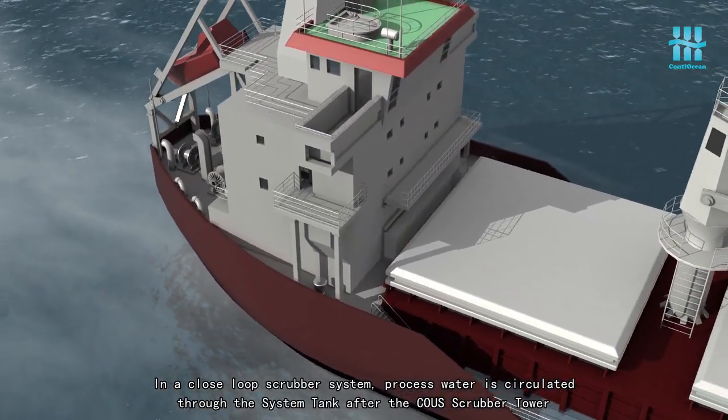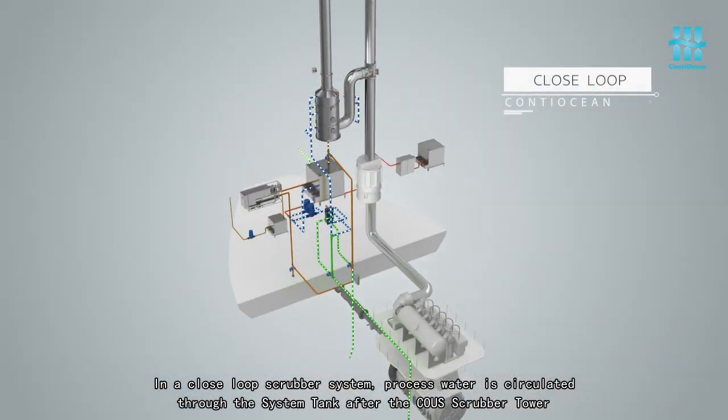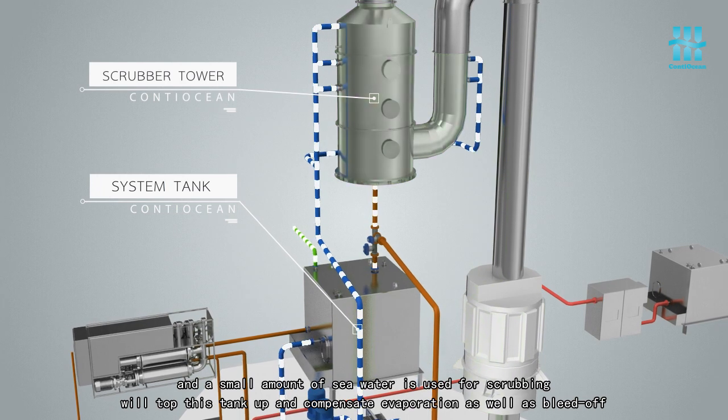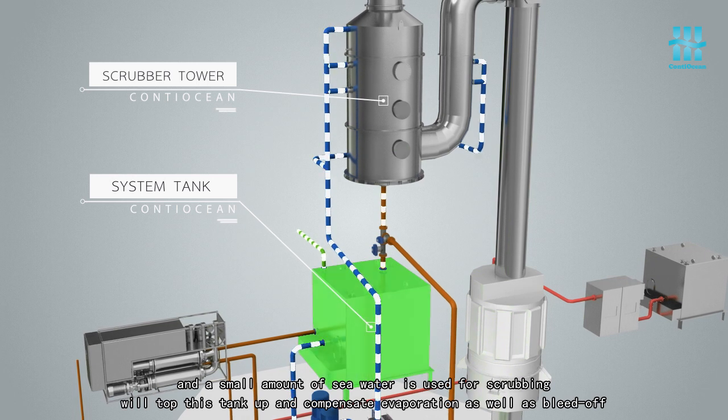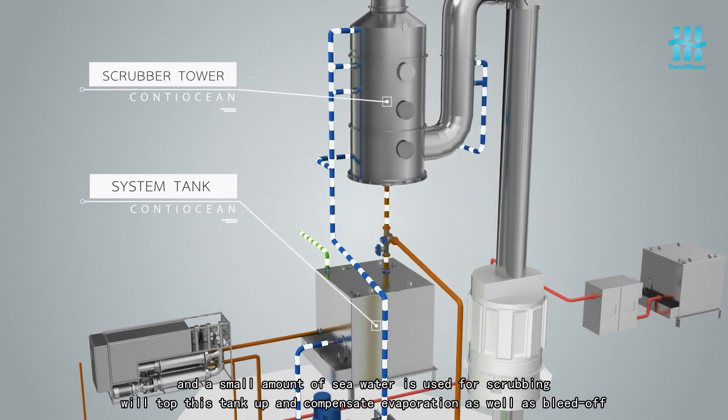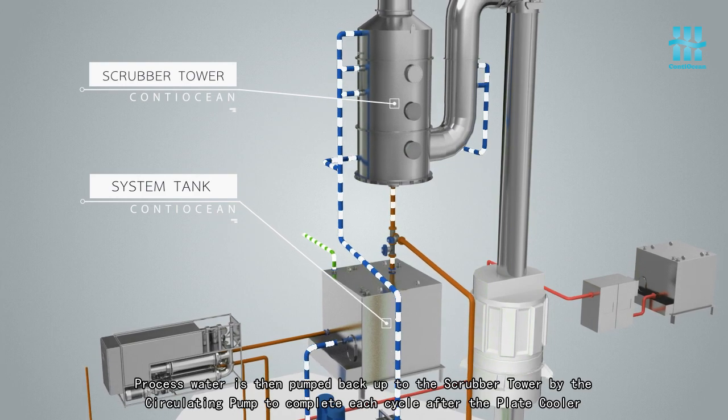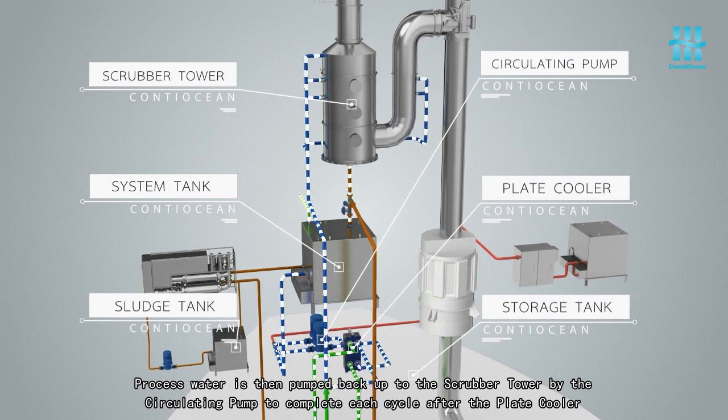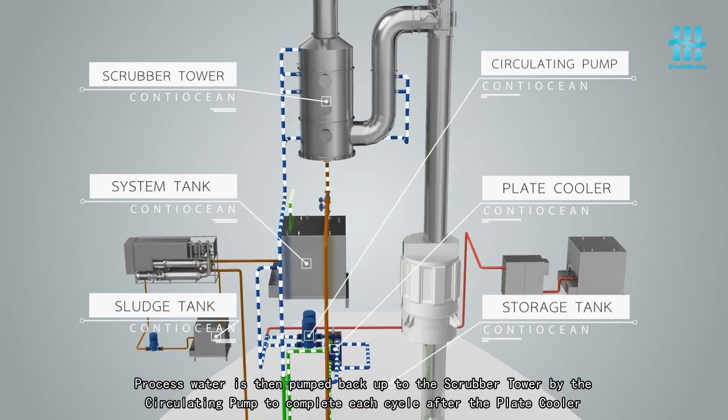In the closed loop scrubber system, processed water is circulated through the system tank after the Koyu scrubber tower and a small amount of seawater is used for scrubbing will top this tank up and compensate evaporation as well as bleed off. Processed water is then pumped back up to the scrubber tower by the circulating pump to complete each cycle after the plate cooler.